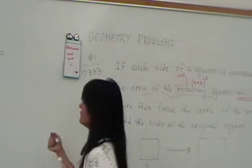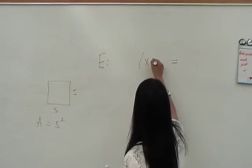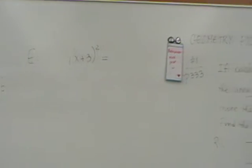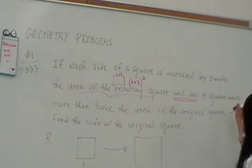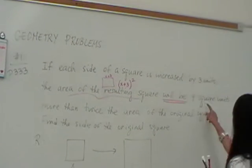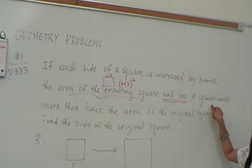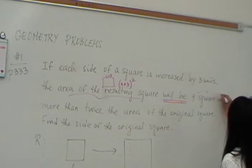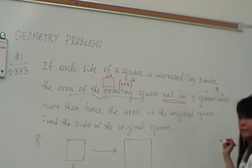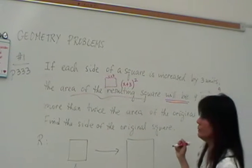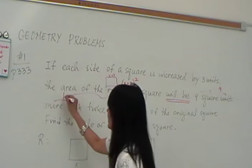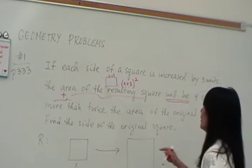So that's your left side. x plus 3, the quantity squared. Now the right. 9 square units. Do you understand why I have to use square units? Because it's area. 9 square units more than, so this is really just going to be 9. More than what? More than is what? What symbol do I use for more than? Plus.